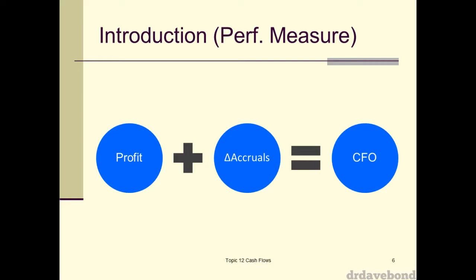Mechanically, for simple examples, this is what happens: you take whatever your profit is, then adjust that profit figure by how accruals change — if accounts payable or accounts receivable has increased or decreased. If accruals have changed, you end up with cash flow from operations. In this case, we had $100,000 of profit, adjusted by $5,000 for the increase in accounts receivable — which you subtract — giving us cash flow from operations of $95,000.